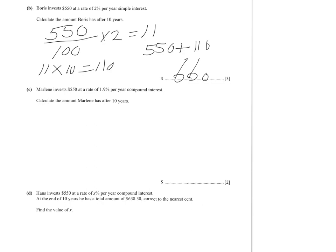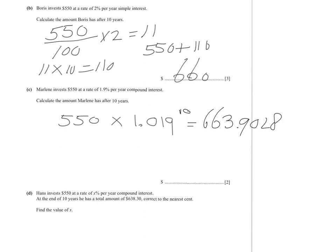Marlene invests $550 at a rate of 1.9% per year compound interest — calculate how much money she has. I don't like using formulas for this. She starts with $550. After one year, multiply by 1.019, meaning the value becomes 101.9% of the previous value. That's for 10 years, so to the power of 10. Plugging it in: $663.90 to two decimal places.